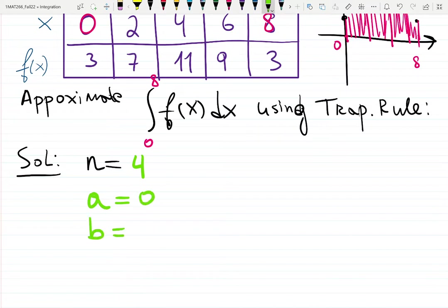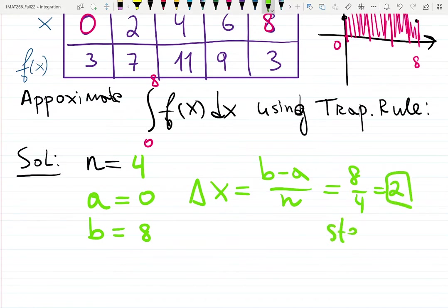What is your a? Zero. And b? Eight. That's given. Δx has a formula: (b - a)/n, which is (8 - 0)/4 = 2. That's the step size.